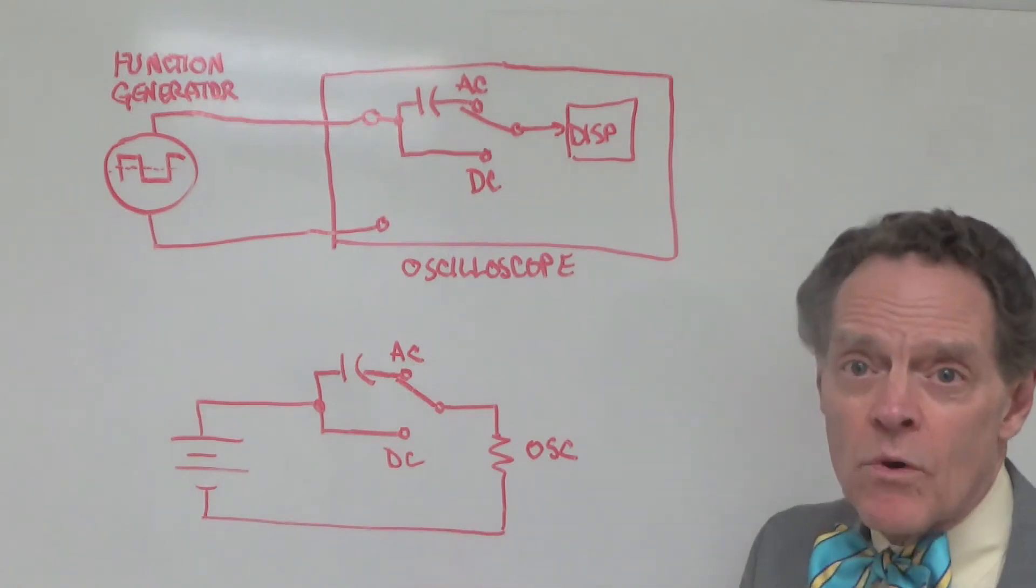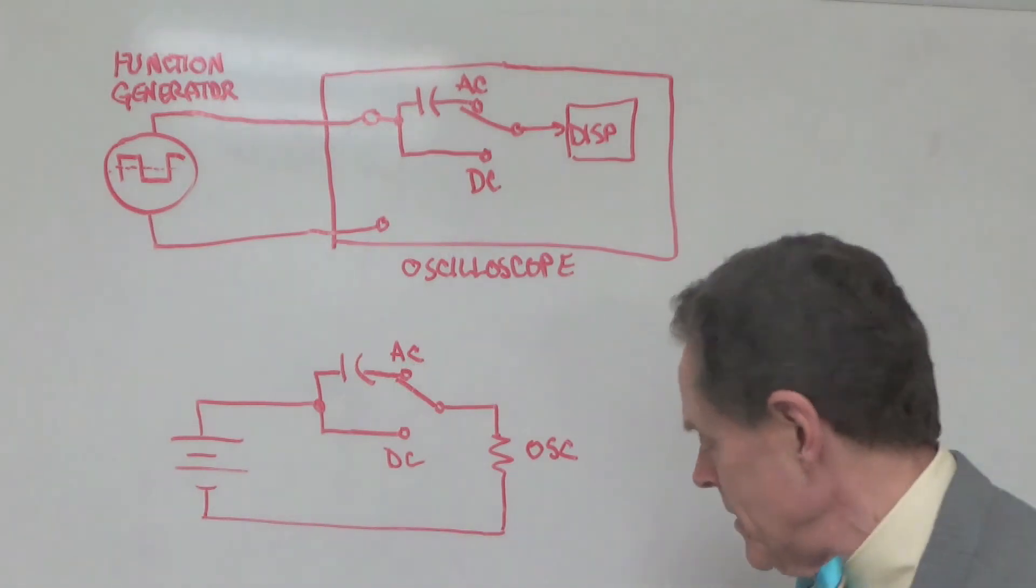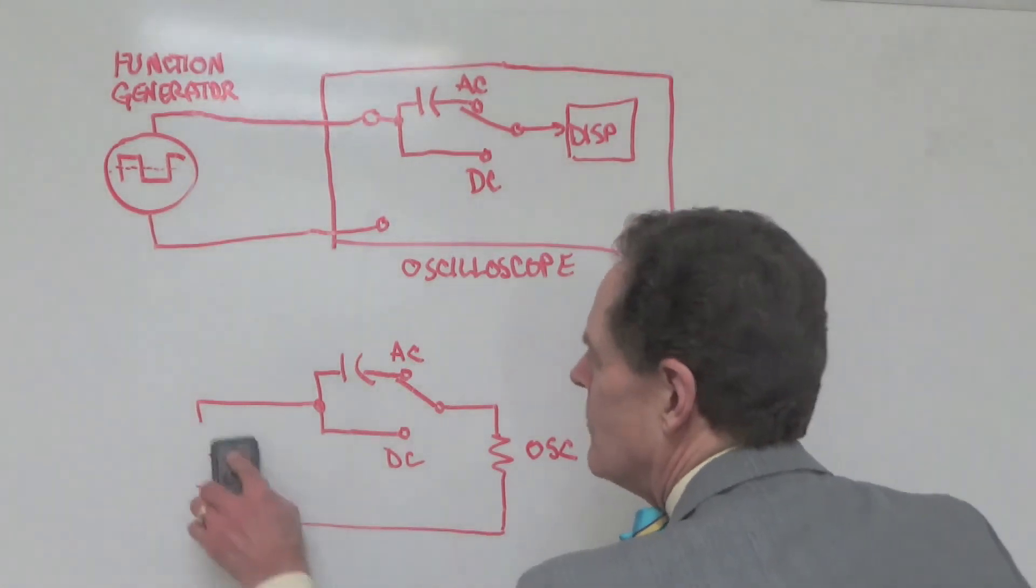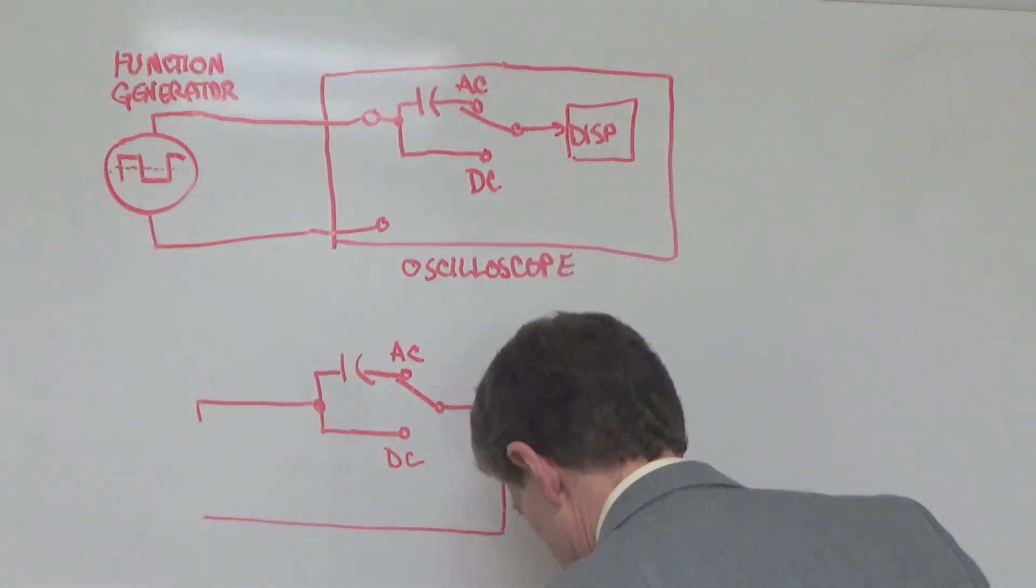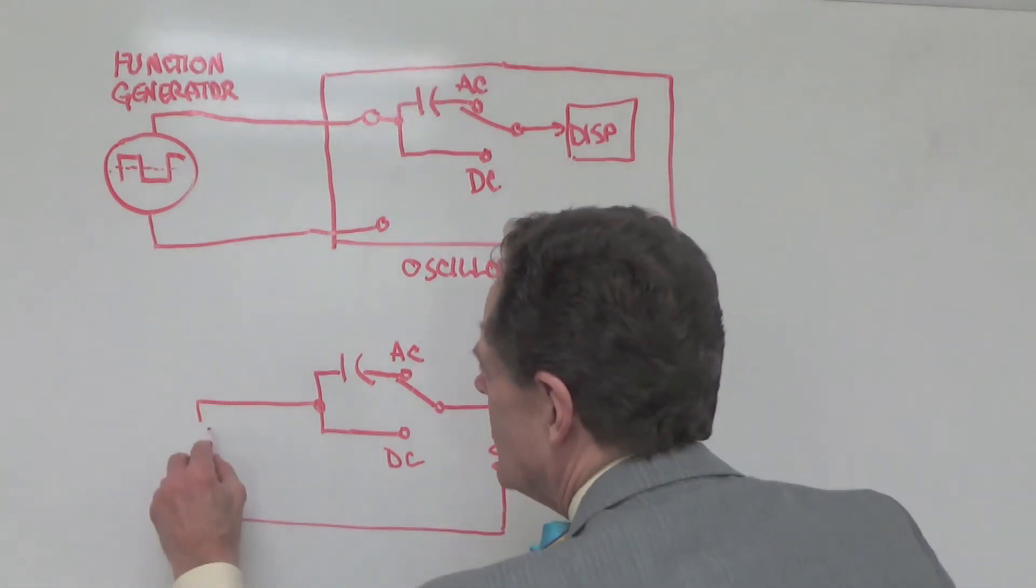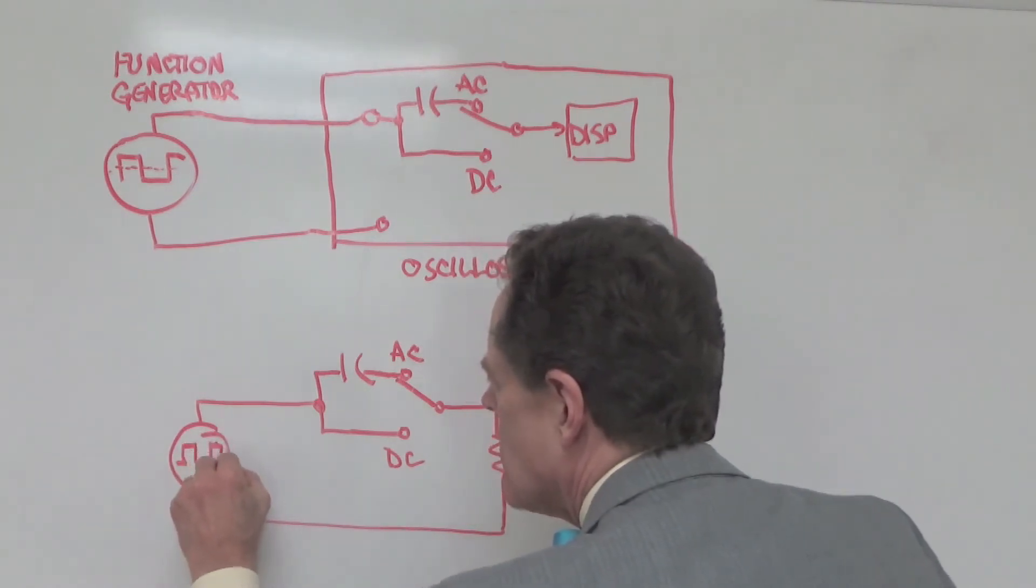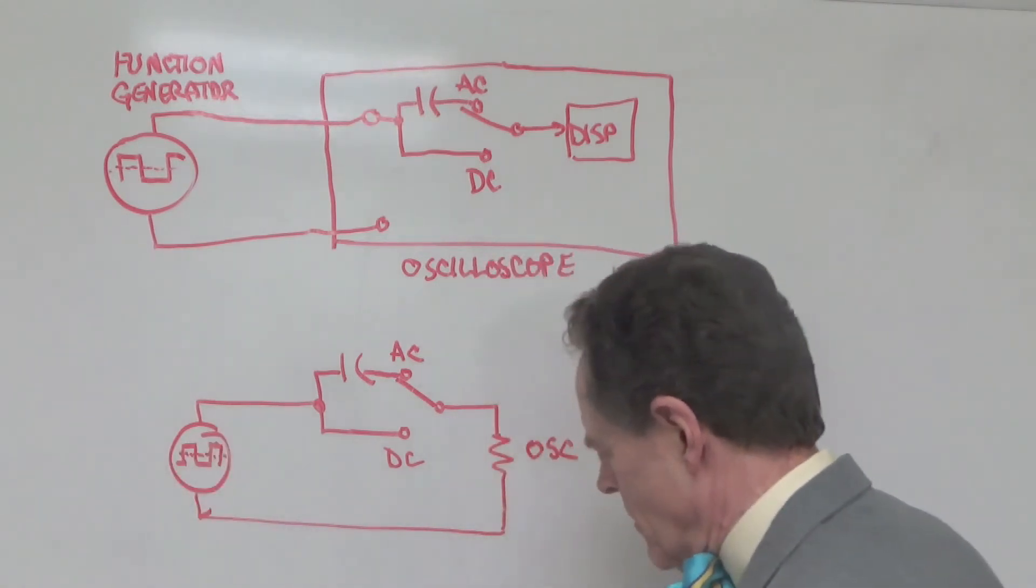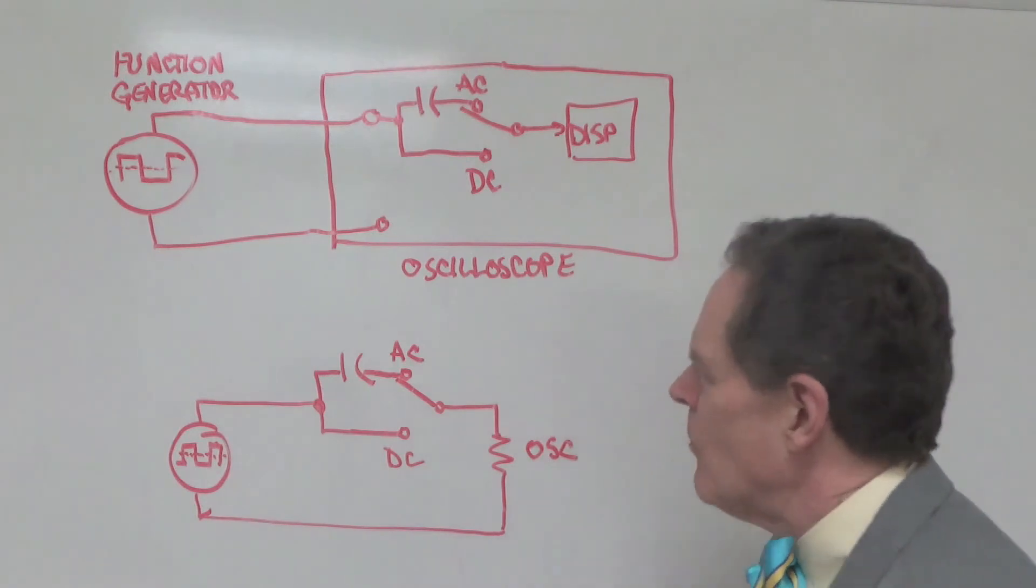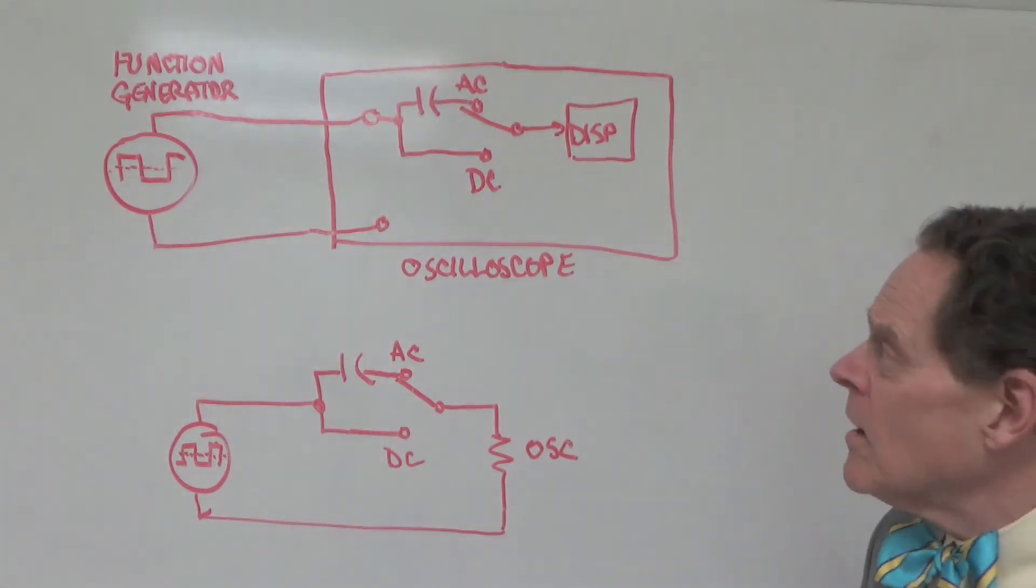So, that's how it works for the battery or for the power supply. Now, if I replace this with the function generator that's generating a square wave. So, I've got a square wave here. And it's both sides of zero. And now, now what do we have? Well, it's a little more complex.